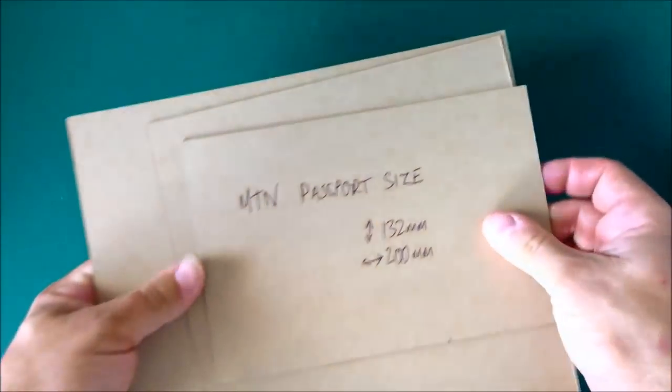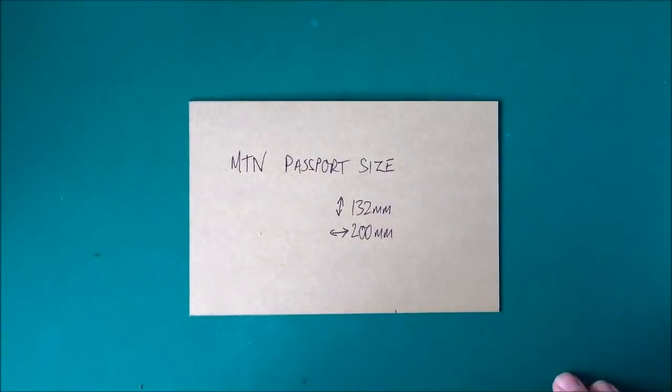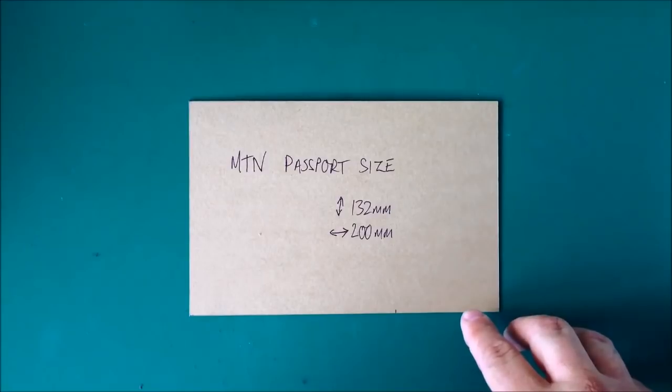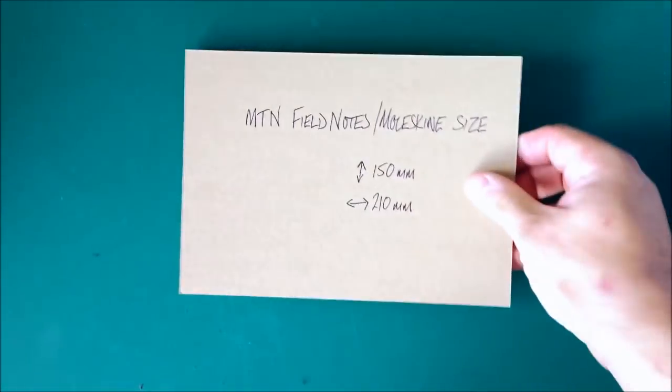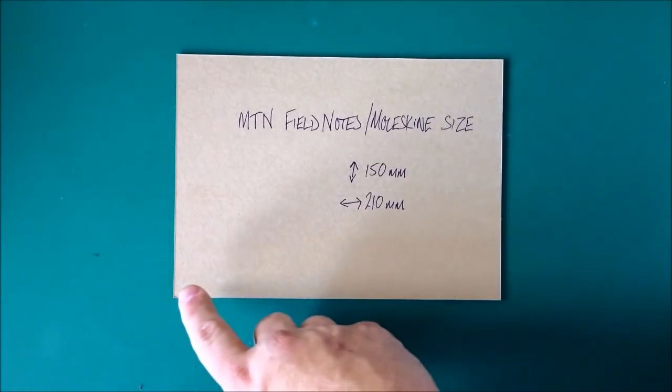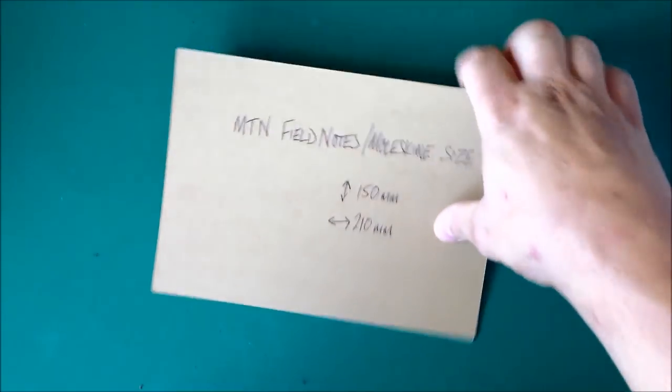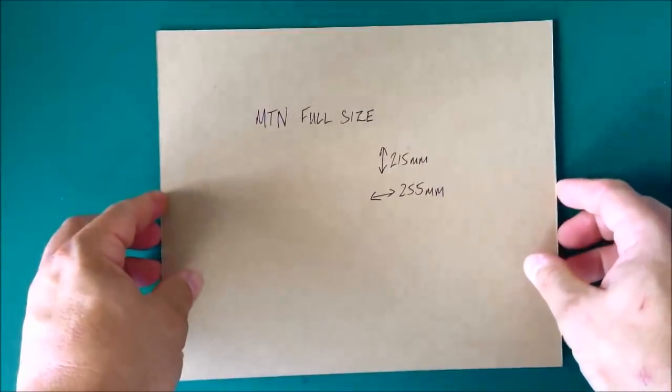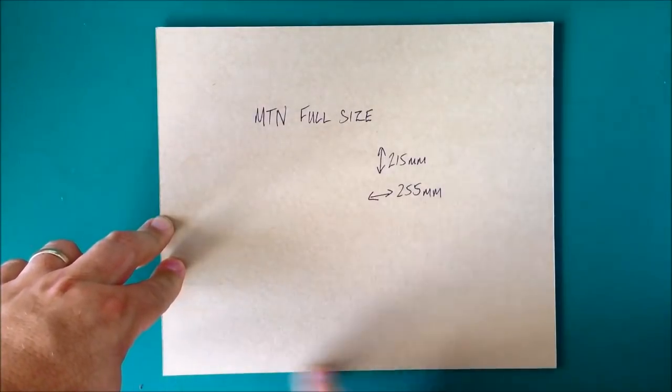First of all, this is if you want to make the very small one, the passport size traveler's notebook, you'll need a piece that's 132mm tall and 200mm wide. If you want to make the field note size or moleskin sized traveler's notebook, you'll need a piece of leather that's 210mm wide and 150mm tall. If you want the full size one, you're going to need a piece that's 215mm tall and 255mm wide.